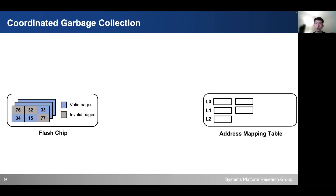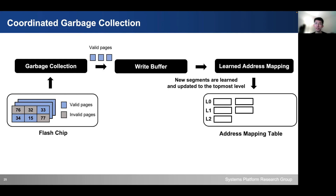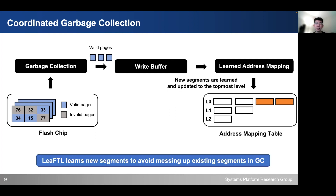Moreover, we perform coordinated garbage collection in LiFTL. We do not modify the existing garbage collector, but for the valid pages copied from the erased flash block, we write them to the write buffer, and after their physical addresses are allocated, we learn new index segments, which are appended to the topmost level of the address mapping table. This is similar to how we handle incoming write requests. By doing so, we learn new index segments to avoid disrupting the existing segments during garbage collection.